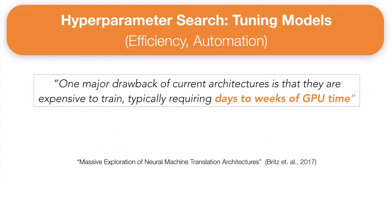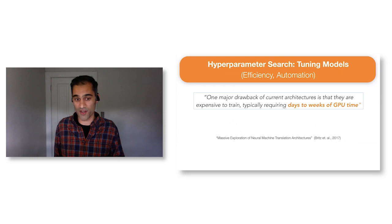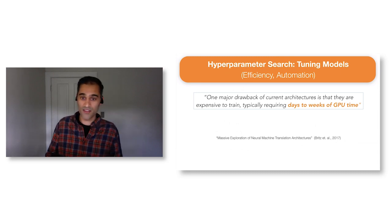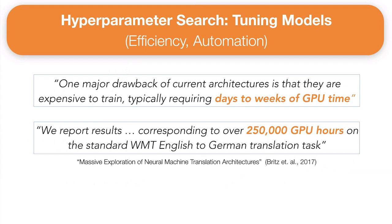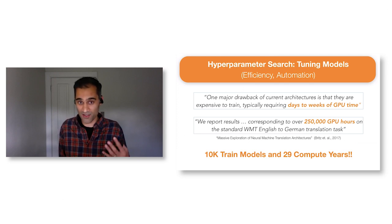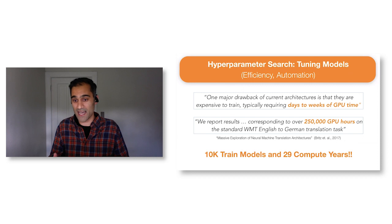Even for this problem with a fixed backbone, it's a very computationally challenging problem with modern deep learning tasks. One paper focused on neural machine translation noted that training a specific model took days to weeks of GPU time. To actually get a model that did well enough on their benchmarks required training in total for over 250,000 GPU hours—over 10,000 models and 29 compute years.